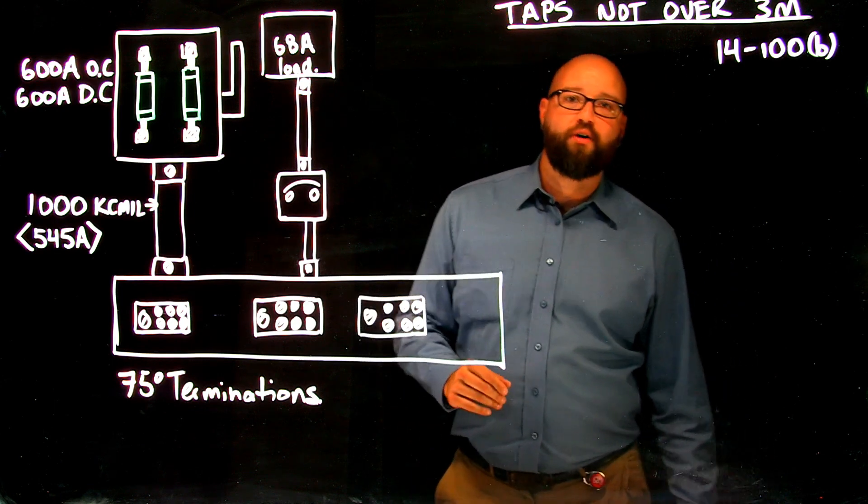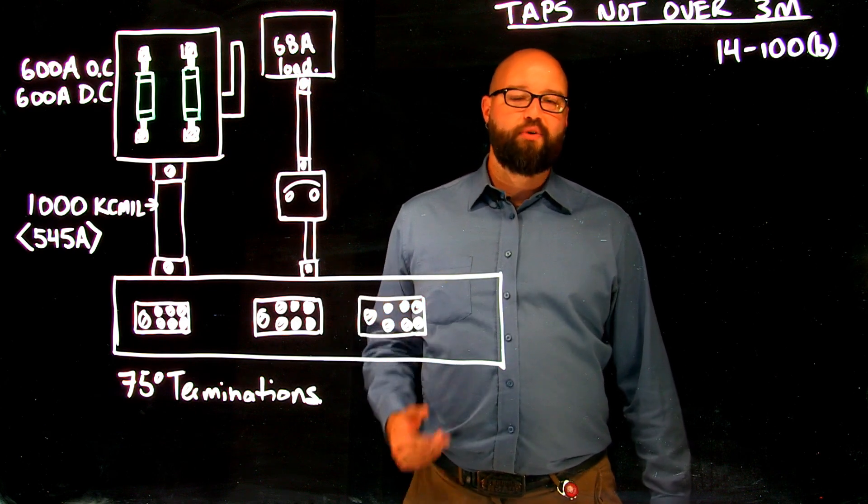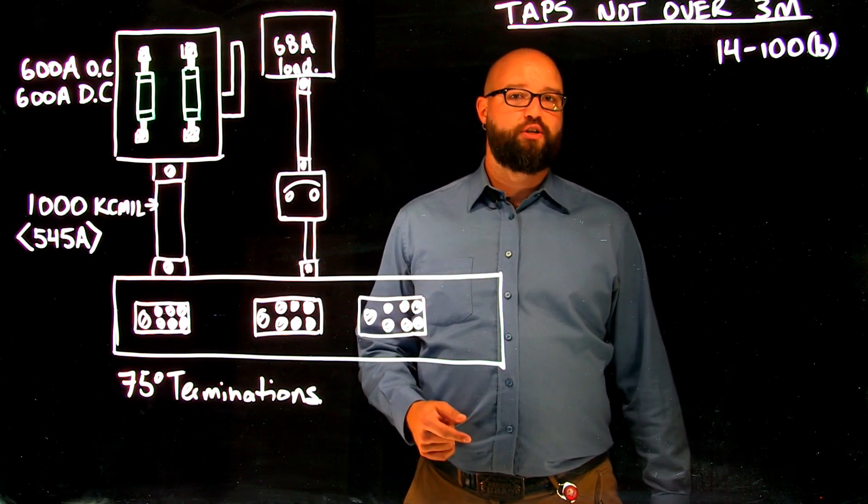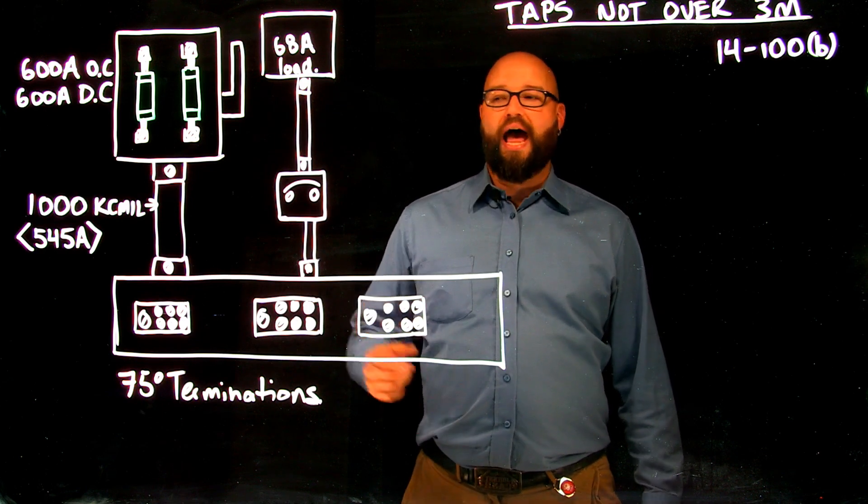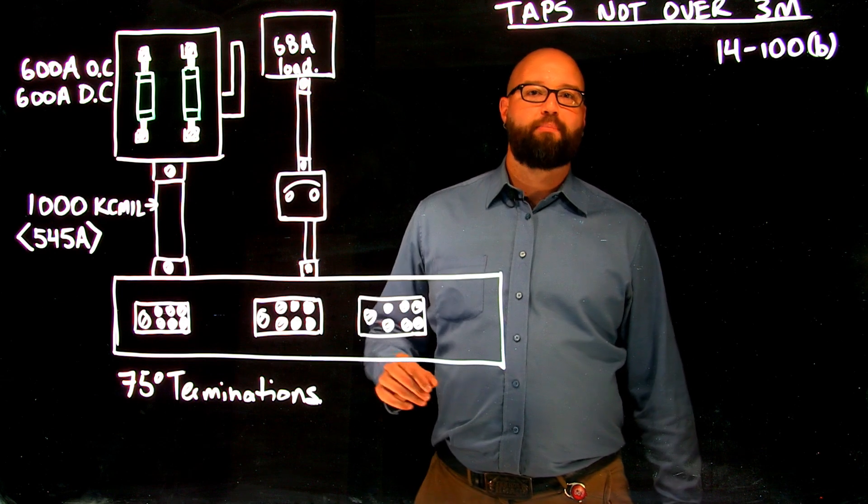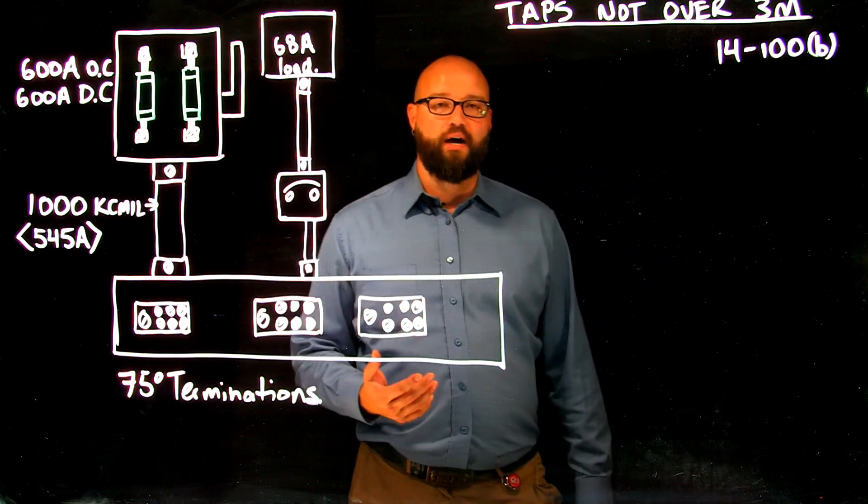I want to start out by pointing out the fact that 14100 tells us right off the bat that anytime we decrease the size of a conductor, we require overcurrent protection or we're allowed to decrease the size after an overcurrent as well. What we want to look at is what happens and where are we allowed to actually downsize the conductor for a tap conductor.